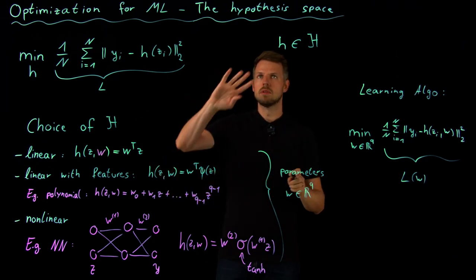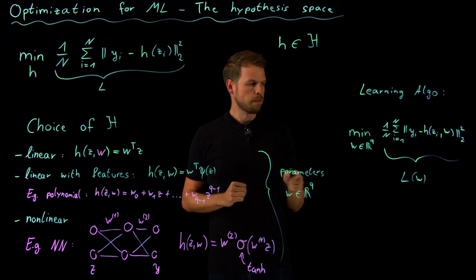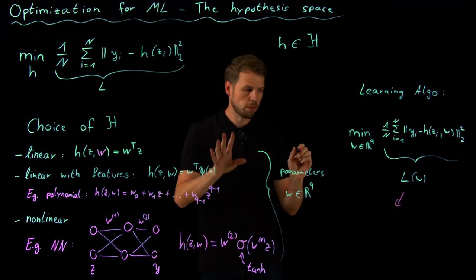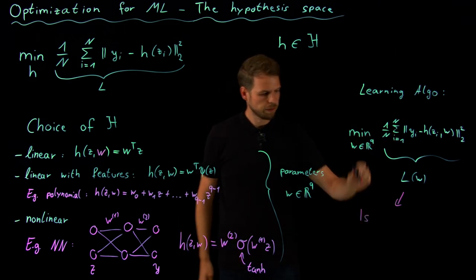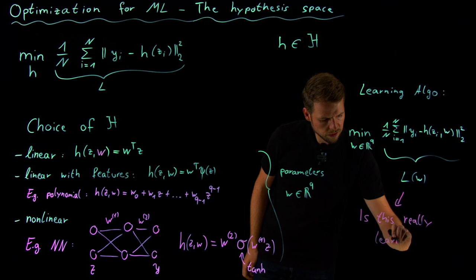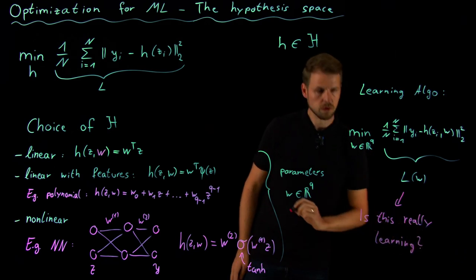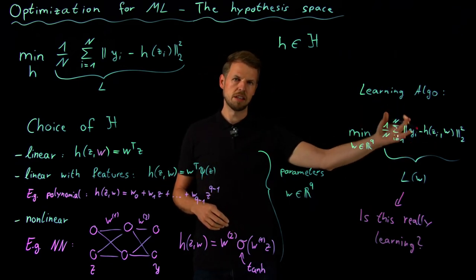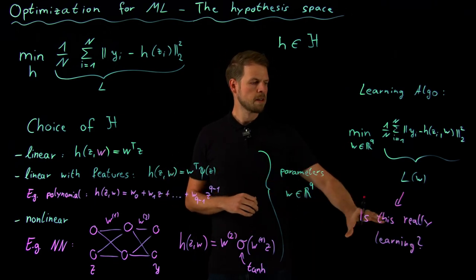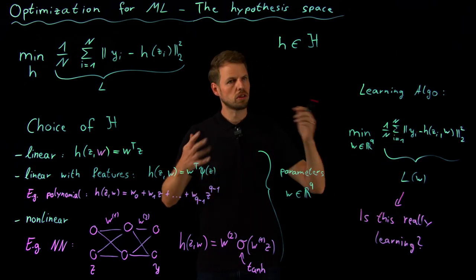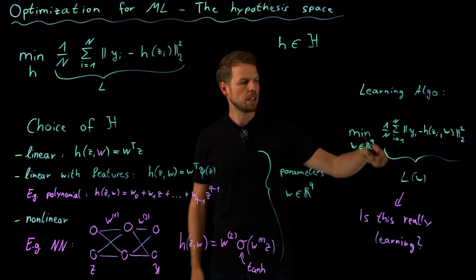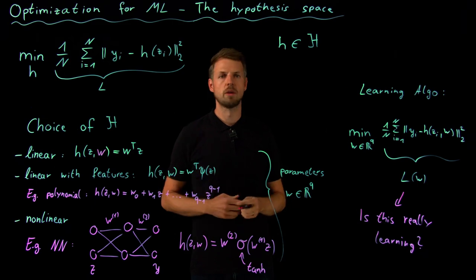And this concludes this brief discussion about the hypothesis space. One thing that I would like to comment on before we close is a question that I'm not going to answer now, but you should already think about this. If I minimize this loss function, is this really learning? So I'm minimizing this given data, I find the best model. Have I learned something, yes or no? And it's not an easy question to answer. We will go there in detail later, but you should already think about this because just minimizing this does not immediately guarantee that we have learned something. But this is it for now. And the next video will cover the question of how we can minimize this loss function using an iterative procedure, which is known as gradient descent. Thank you.